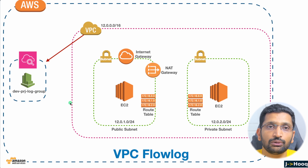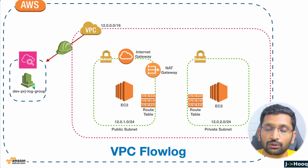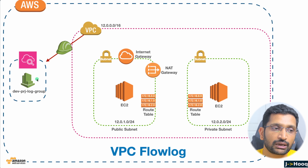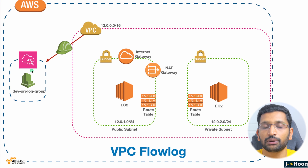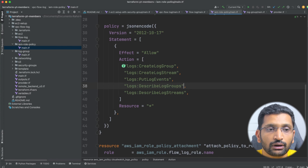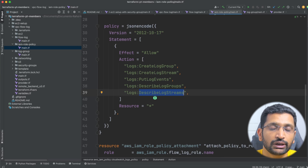The next thing we need to do after creating the log group is set up IAM permissions and policies so that the VPC uses the correct IAM permissions to send logs to the correct log group. The permissions needed are: CreateLogGroup, CreateLogStream, PutLogEvents, DescribeLogGroups, and DescribeLogStreams. These are the permissions needed by the role so it can write logs to the log group.